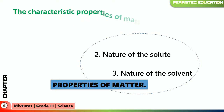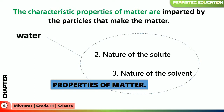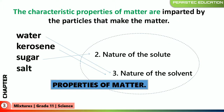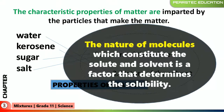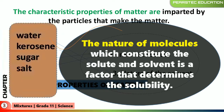The characteristic properties of matter are imparted by the particles that make up the matter. Sugar, salt, kerosene oil, and water are all matters made of particles. Water and kerosene are the nature of the solvent, while sugar and salt are the nature of the solute. The nature of the molecules which constitute the solute and solvent is the factor that determines solubility.